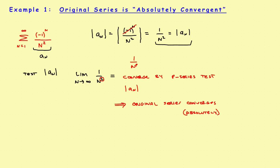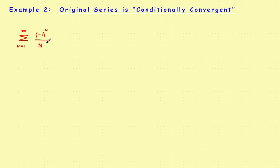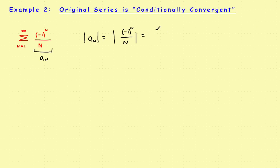Now let's do the second example — this one will be conditionally convergent. It looks similar but rather than n squared, suppose the denominator is just n. So a sub n is something like (-1)^n over n. The absolute value of a sub n just eliminates the sign switch, giving 1 over n as the absolute value series.